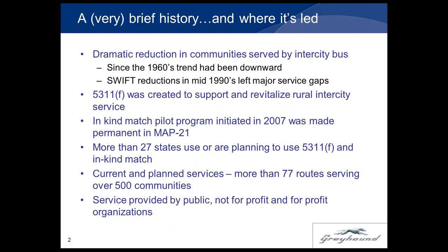The focus of this presentation is how Greyhound works with rural feeder providers and how we use in-kind match to help expand service and travel options. 5311F is a response to the need to support and revitalize rural intercity service. The in-kind match program, which was initiated in 2007 as a pilot program and was made permanent under MAP-21, has become a very important element in the success of 5311F.